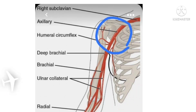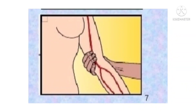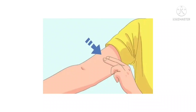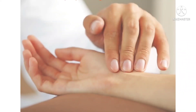The brachial pulse can be located by feeling the bicep tendon in the area of the antecubital fossa. Move the pads of your three fingers medially about two centimeters from the tendon and about two to three centimeters above the antecubital fossa to locate the pulse.